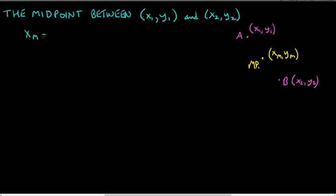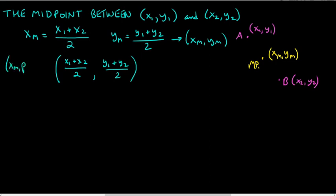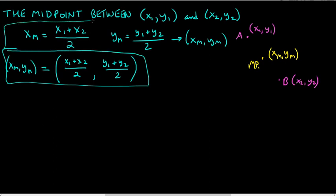Here's the midpoint formula: xM equals x1 plus x2 divided by 2 — you're adding, not subtracting, and then dividing by 2, cutting it in half. You do the same thing for the y's: yM equals y1 plus y2 divided by 2. Written as a single point: midpoint equals (x1 plus x2 over 2, y1 plus y2 over 2). That's how to find the midpoint — just add up the coordinates and divide by 2.